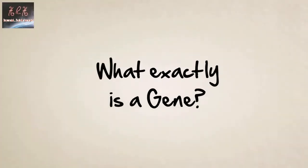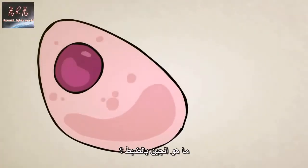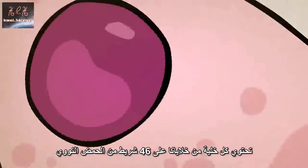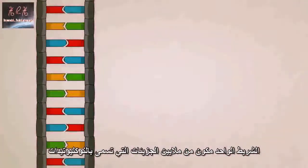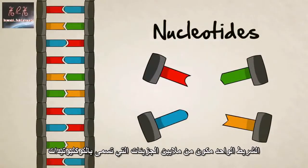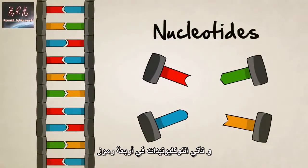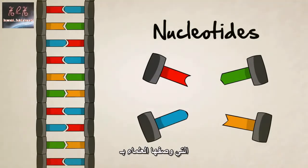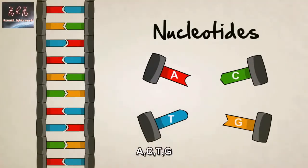What exactly is a gene? Each one of our cells contains 46 strands of DNA. A single strand is made of millions of particles called nucleotides, and these nucleotides come in four different types, which scientists have labeled A, C, T, and G.